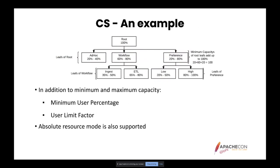In addition to queue capacities, minimum user percentage and user limit factor can be configured for fine-grained resource control. Minimum user percentage is a soft limit on the smallest amount of resources a single user should get — if it is 10%, the user should get at least 10% of the queue's minimum capacity. User limit factor is a maximum limit as a multiple of the queue's minimum capacity, where 1 means the user can use at most the queue's entire minimum capacity, 0.5 means half, and 3 means three times as much.